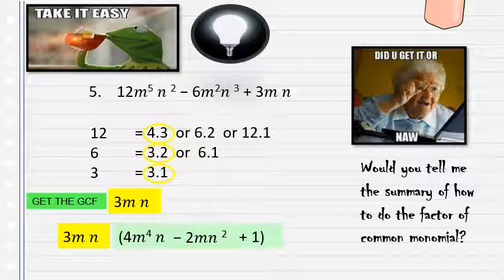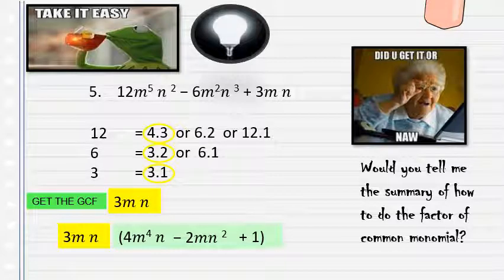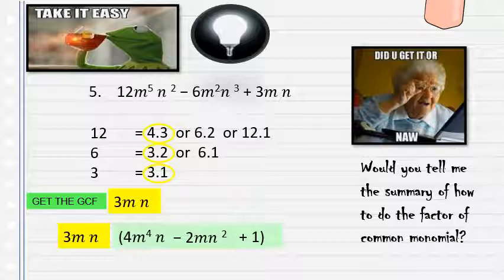Let's summarize how to factor with common monomial factor. Step 1: determine the terms. Step 2: find the GCF. Step 3: divide the GCF into the original expression. Step 4: write in complete factored form.